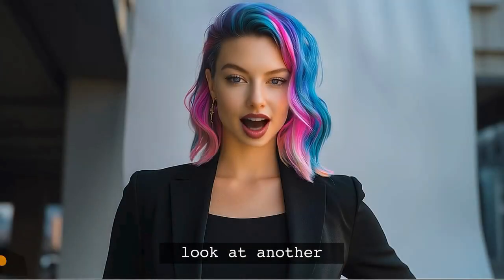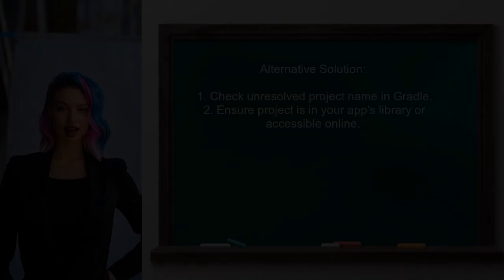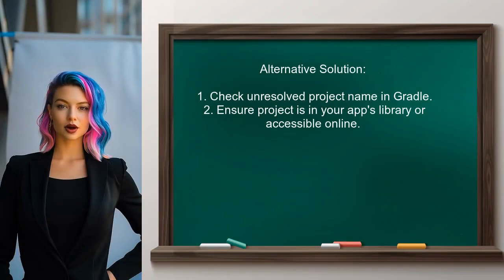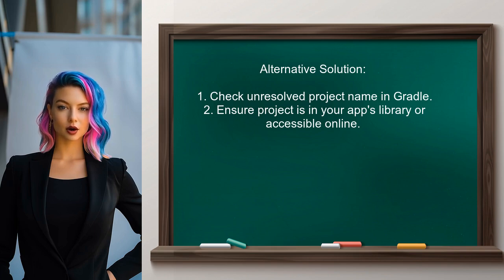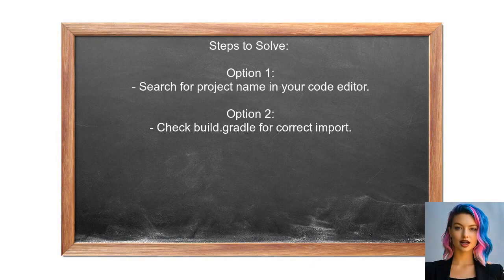Another user's solution focuses on the line that mentions the unresolved project. This indicates that the project name — like abchat — may not be correctly referenced in your Gradle file. They recommend checking if the project is either saved in your app's library or being downloaded from a web resource. To resolve the issue, there are two options: first, use your code editor to search for the project name in your files to confirm its import status; second, review the build.gradle file to verify the project's availability and correct import method.